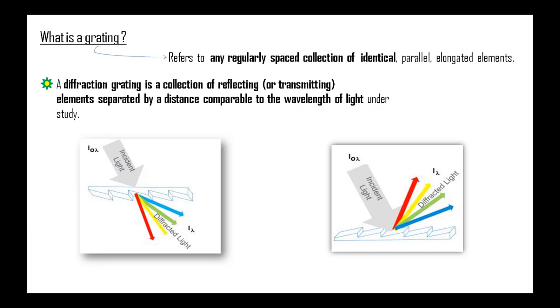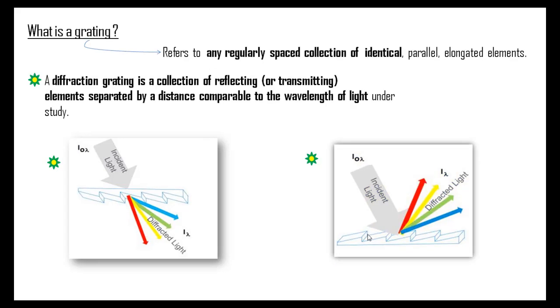There are two major types of diffraction gratings that can be found in most of the labs. A transmission grating, in which the incident and the diffracted rays lie on the opposite sides of the grating. And second is a reflection grating, in which the incident and the diffracted rays lie on the same side of the grating. A reflection grating is basically a transmission grating followed by a reflecting surface.